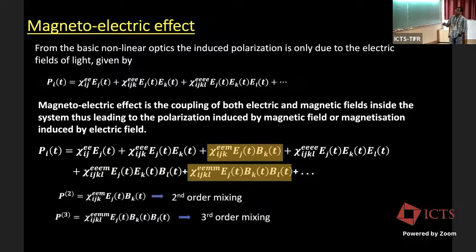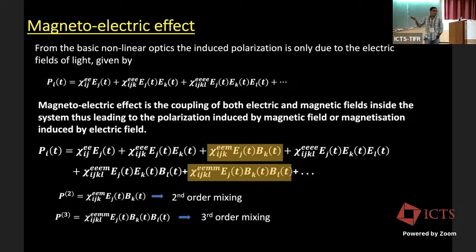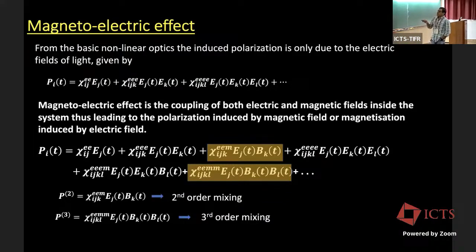In our first experiment we demonstrated two of these processes. In later experiments we demonstrated higher-order processes. The first is a second-order chi_EEM susceptibility developing a second-order electric polarization in the medium due to the presence of an electric field and a magnetic field — a kind of wave mixing process. The second is a third-order wave mixing process involving one electric field and two magnetic fields.